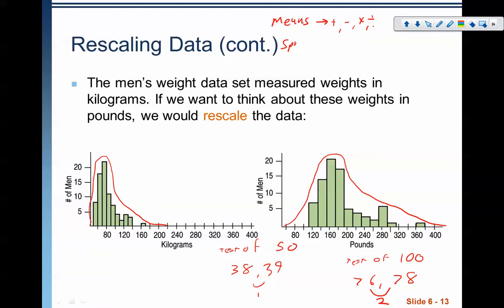Whatever we do to all of the data is the same thing that we're going to do to the position. Measures of spread, that would be standard deviation, interquartile range, et cetera, are only affected by multiplication and division. They are not influenced by changes in addition and subtraction.